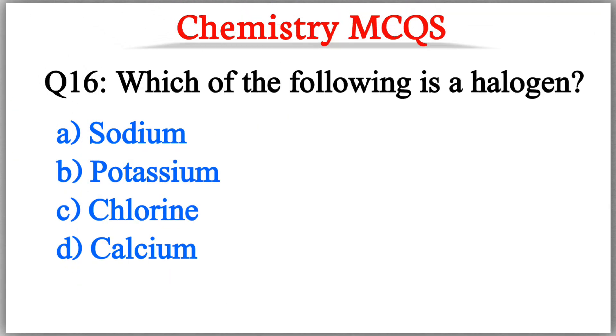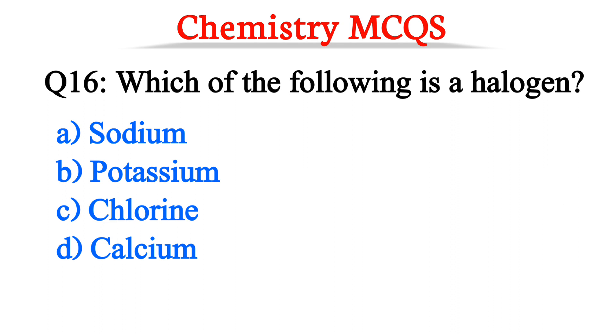Question number 16. Which of the following is a halogen? The correct option is option C, Chlorine.